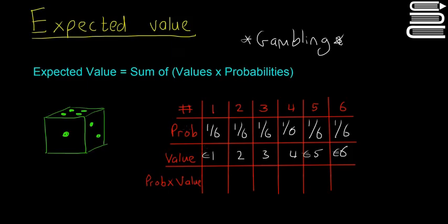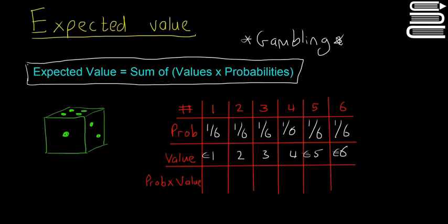Now I'm going to multiply the probability times the value. That comes from the formula for expected value, and this is something you have to learn - I don't think it's in the formula book. Expected value is the sum of the values times probabilities. So we multiply the probability times the value. This one here is one over six, this is two over six, three over six, four over six, five over six, and six over six.